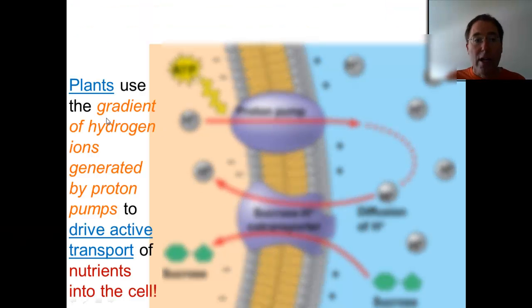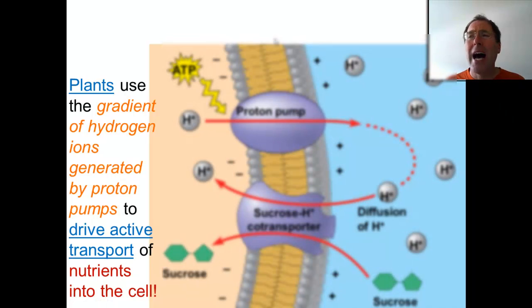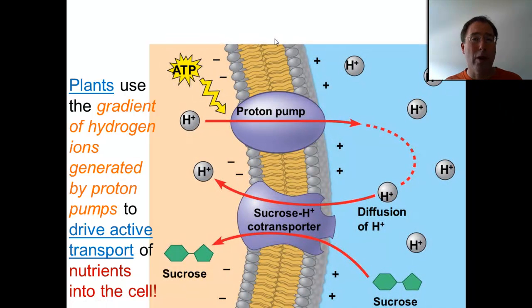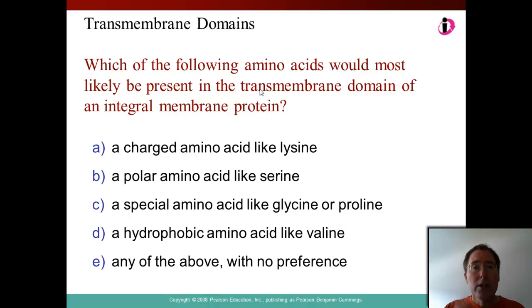Additionally, plants use a gradient of hydrogen ions generated by these proton pumps to enable them to get ions and minerals from the soil in their roots. This is how they get the minerals that they need in order to do all their functions within the body of the plant. So take a moment and please try to answer this question. We will talk about it tomorrow.